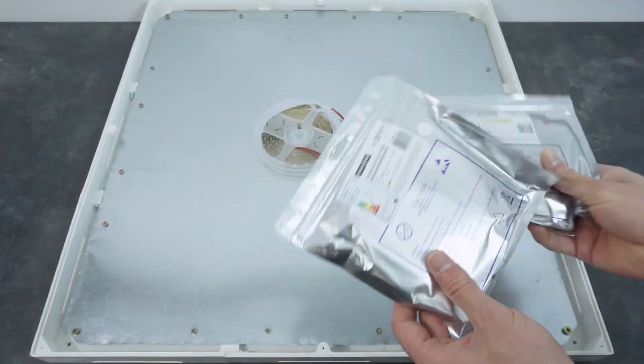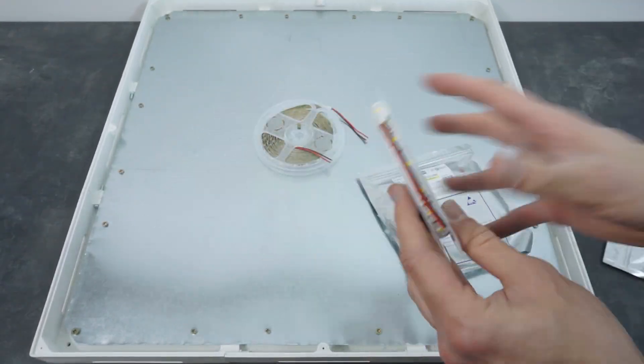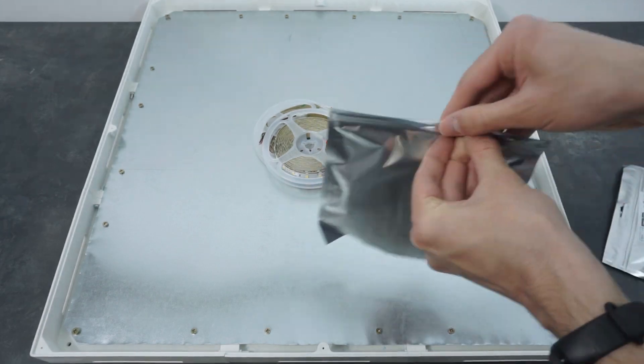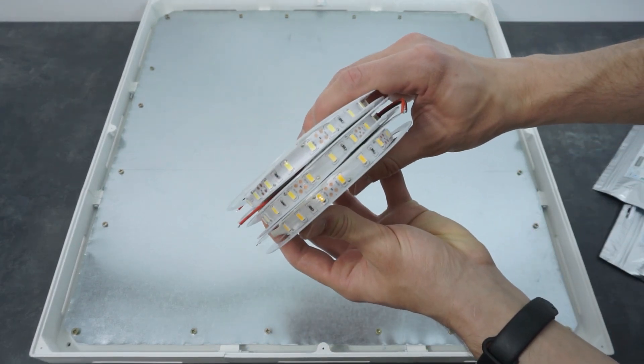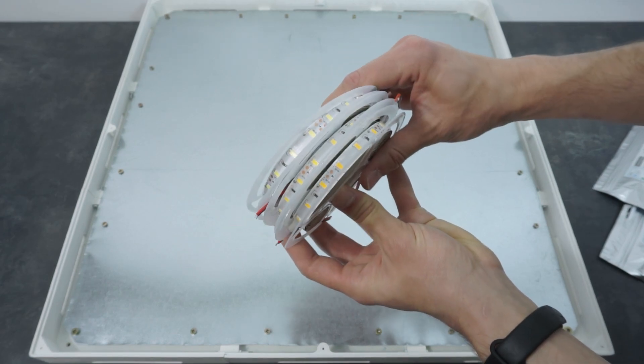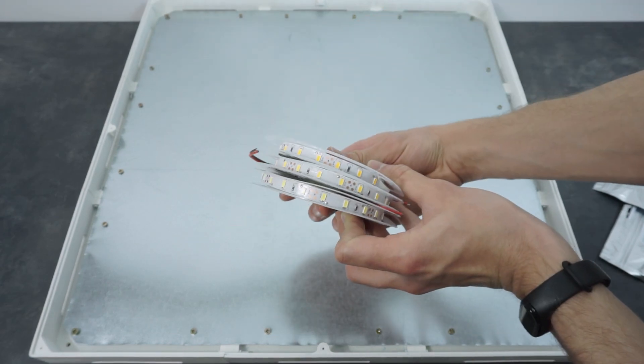Next I placed the steel square inside the frame and fixed it with more screws. Now for this panel I'm going to use three LED strips with different color temperatures: cold, neutral, and warm white. By combining them I'll be able to easily change moods from colder tones for work to more warm tones for relaxation.